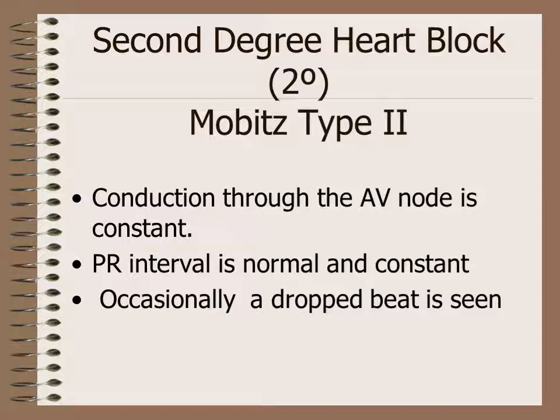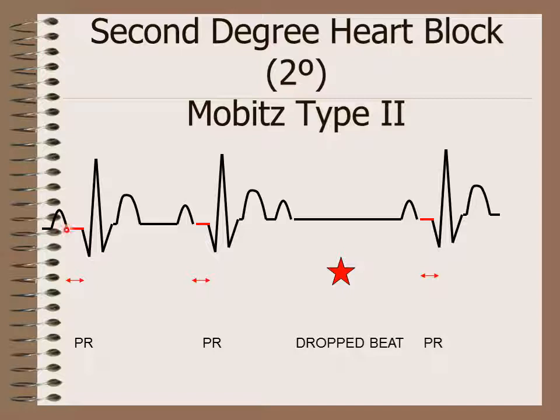Second degree heart block Mobitz type 2: here conduction through the AV node is constant, meaning there is no gradual prolongation of the PR interval, but occasionally and without warning, one P wave is not conducted. In the first cycle, the PR interval is normal; in the second cycle, the PR interval is still normal; in the third cycle, the P wave is not conducted to the ventricle — there is no QRS following the P wave. Then the P wave comes at its usual time with a normal PR interval and the cycle continues.